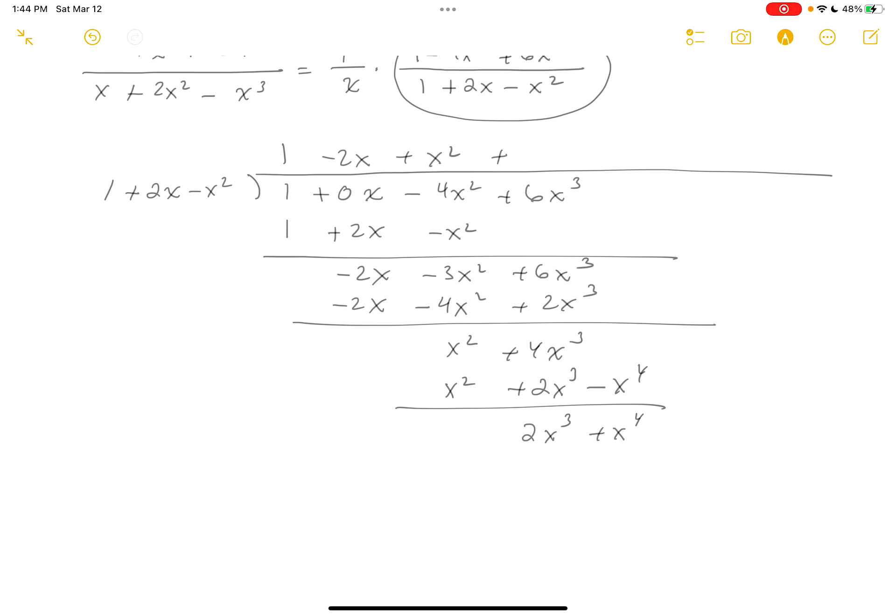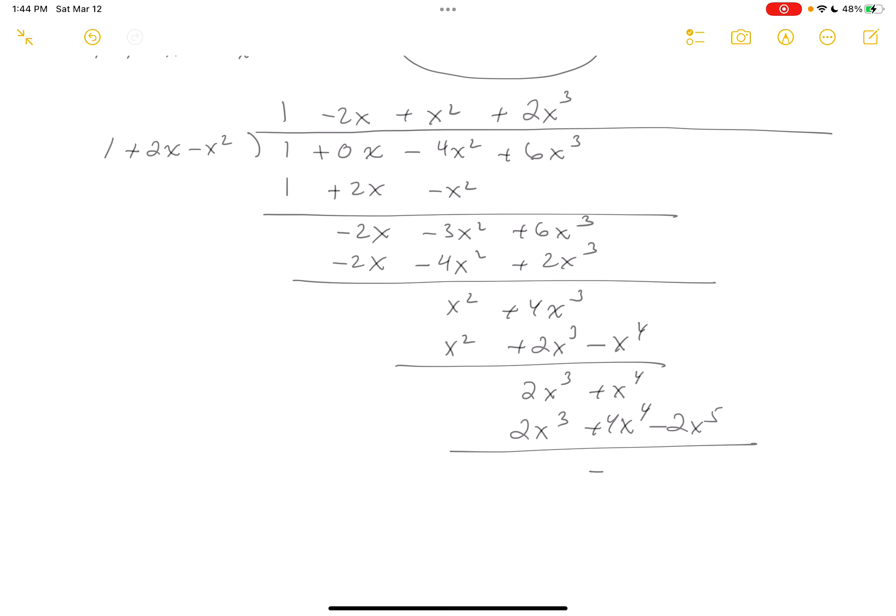So let's put this down. Plus. Looks like 2x cubed, right? We're getting close. 2x cubed. And then you're going to get, let's see, 4x4 minus 2x5. Subtract. Minus 3x4. Plus 2x5.